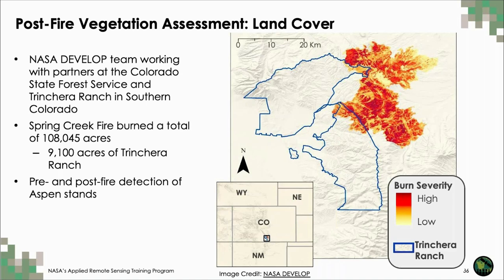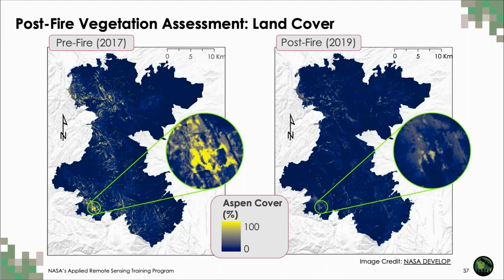To complete this assessment, the team used ground-based observations, Landsat 8 data, and Sentinel-2 data to train and run several random forest models that detect pre- and post-fire Aspen extent — a method of supervised land cover classification. The team's pre-fire estimate for 2017 shows a much higher percent cover of Aspen throughout the burn scar when compared to post-fire estimates completed for 2019. This methodology is useful for identifying vegetation regrowth but can be limited in the short term, being more appropriate for mapping Aspen regrowth several years after the fire event.